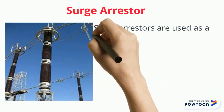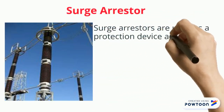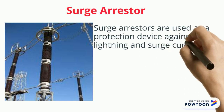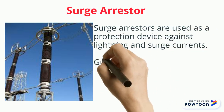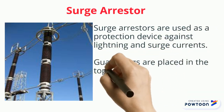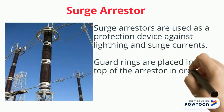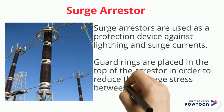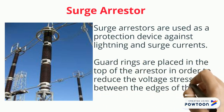Surge arresters are used as a protection device against lightning and surge currents. Guard rings are placed at the top of the arrester in order to reduce the voltage stress between the edges of the insulators.